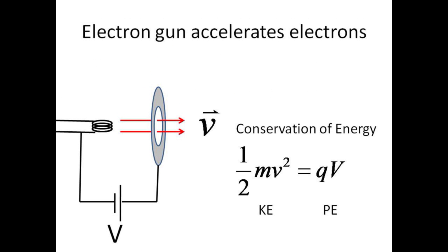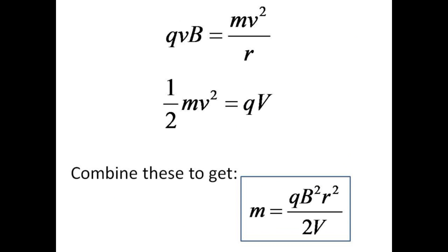The charged particles used here are electrons emitted from an electron gun. We can relate the speed that the electrons emerge from the gun to the accelerating voltage using the conservation of energy. The gain in kinetic energy results from the loss of electric potential energy. We can use the two equations resulting from these physical notions to eliminate the unknown velocity v from the expressions and solve for the mass of the electrons in terms of their charge, the magnetic field B, the radius of the circular path, and the accelerating voltage, capital V.